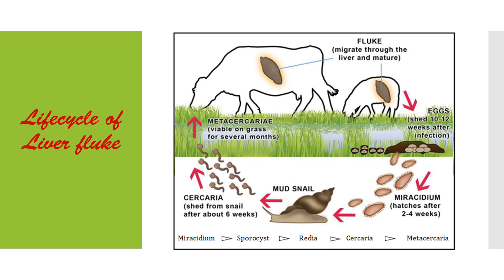A very interesting phenomenon seen during the life cycle of liver fluke is polyembryony, which means that one larval form multiplies during its transformation to another larval stage. This means one egg will not develop into one Metacercaria; rather, one egg will develop into numerous Metacercaria. As a result, the survival rate of this organism increases manifold. This is a kind of adaptation for increasing the chances of perpetuation of the species.